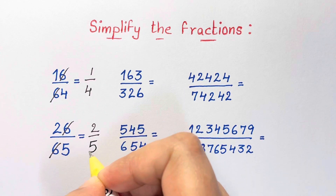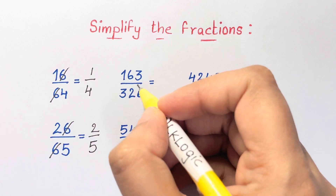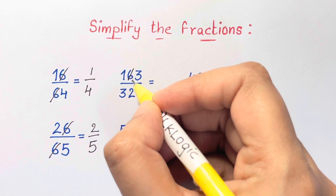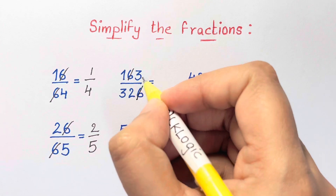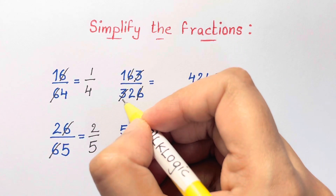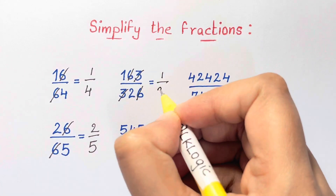I was thinking this is pretty easy. So for the next problem, I'll cancel out the 6s. And actually I could cancel out the 3s as well to get to the answer of 1 half.